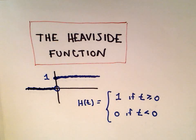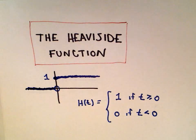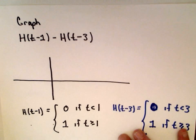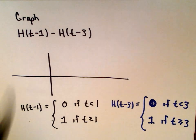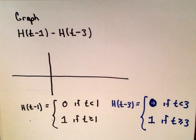This does confuse people a little bit, so I just want to look at one simple example in this video, make a couple observations, and then we'll look at a couple other examples in another video. The first thing I'm going to do is graph the function h of t minus 1 minus h of t minus 3.